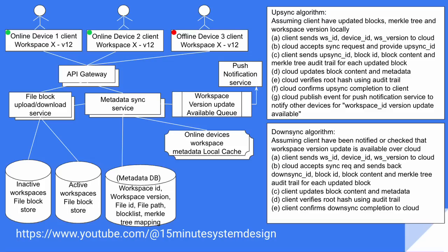Now let's also summarize how down sync happens. Assuming the client has either been notified by push notification or has checked periodically that a higher workspace version is available over the cloud, the client sends workspace ID, device ID, and workspace version to the cloud. The cloud understands that the workspace version received is a lower one than what the cloud is maintaining, so it's a down sync. The cloud accepts the sync request and sends back a down sync ID along with block ID, block content, and Merkle tree audit trail for each updated block. The client starts receiving the data, updates block content along with metadata, and finally verifies the root hash using the audit trail and confirms the down sync completion to the cloud.